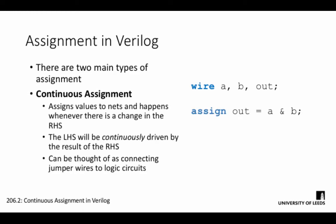Continuous assignment assigns values to nets and happens whenever there is a change on the right-hand side. As a result, the left-hand side is continuously driven by the right. This can be thought of as wiring up a combinational circuit with jumper wires. Whatever changes there are in the circuit, the output will be affected.